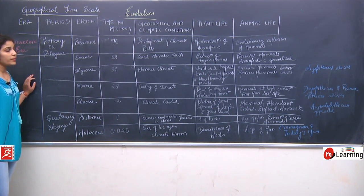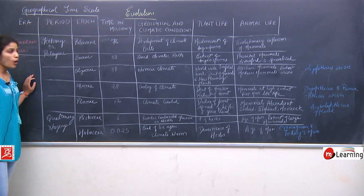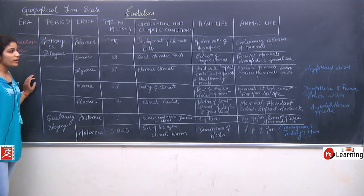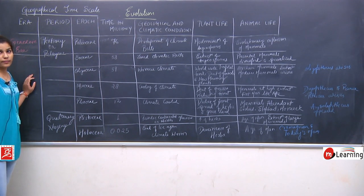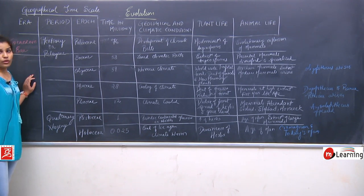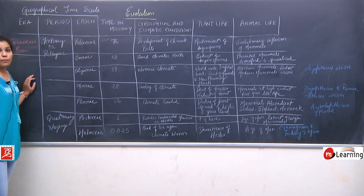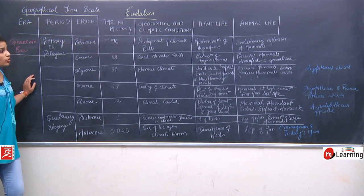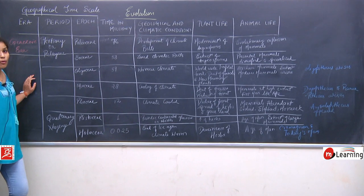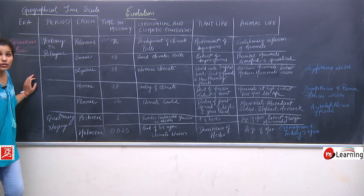The third epoch, Oligocene, was around 39 million years ago. Climatic conditions were quite warmer. In plant life, there was worldwide tropical forest and the development of monocots and new flowering plants. The angiosperms had been extincted in the Eocene epoch, and now new flowering plants developed in the Oligocene epoch. Tropical forests started to develop. In animal life, archaic mammals were extincted and modern mammals started to arise.